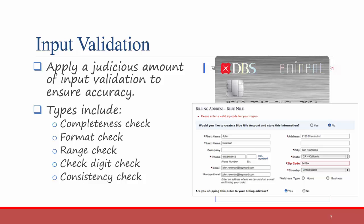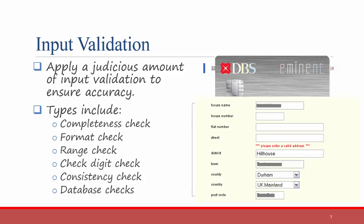Consistency checks make sure that data input into separate fields are consistent with each other. For example, if you put San Francisco, California as your city and state, but you put something different as your zip code — like 84725, which isn't a zip code for that city — then the system can ask you to make sure you're inputting the right information. Finally, database checks check your input against a separate database. For example, many systems are connected to the USPS postal address database, so if you type in an address that isn't listed there, it will tell you that you have put in invalid information.